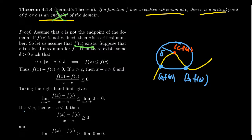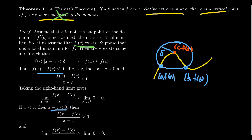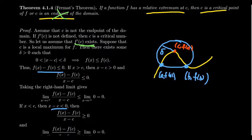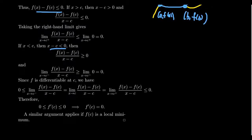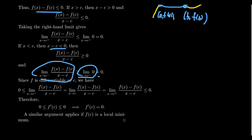If x is a little bit less than c, then x − c is negative. A non-positive value divided by a negative gives f(x) − f(c) over x − c ≥ 0. Taking the limit of the difference quotient from the left, it must be greater than or equal to zero.